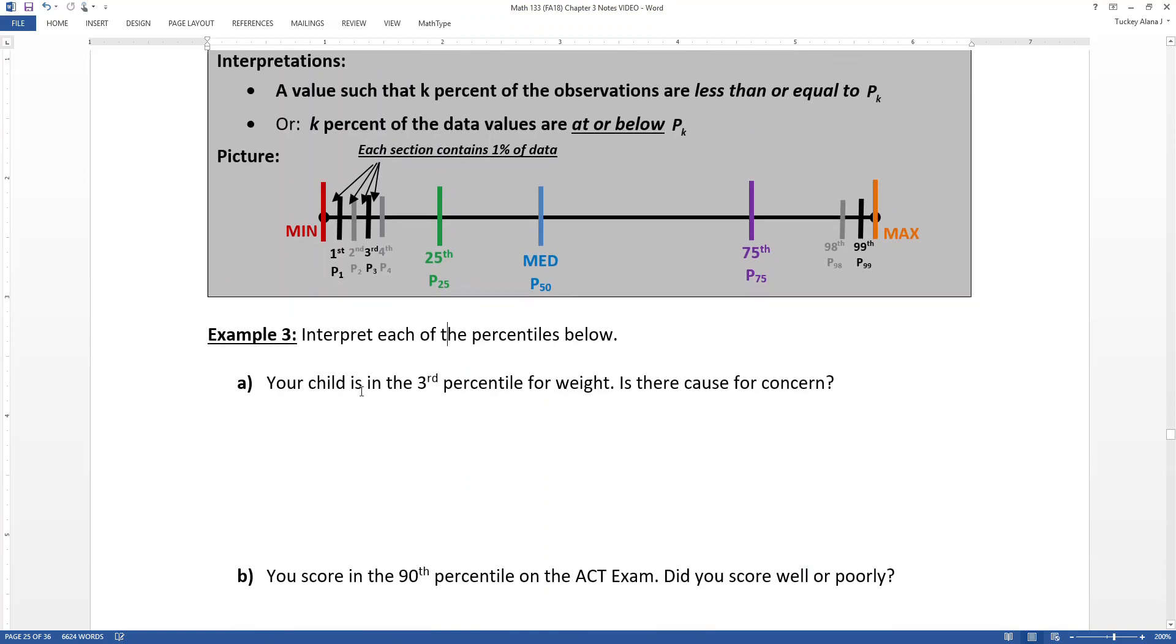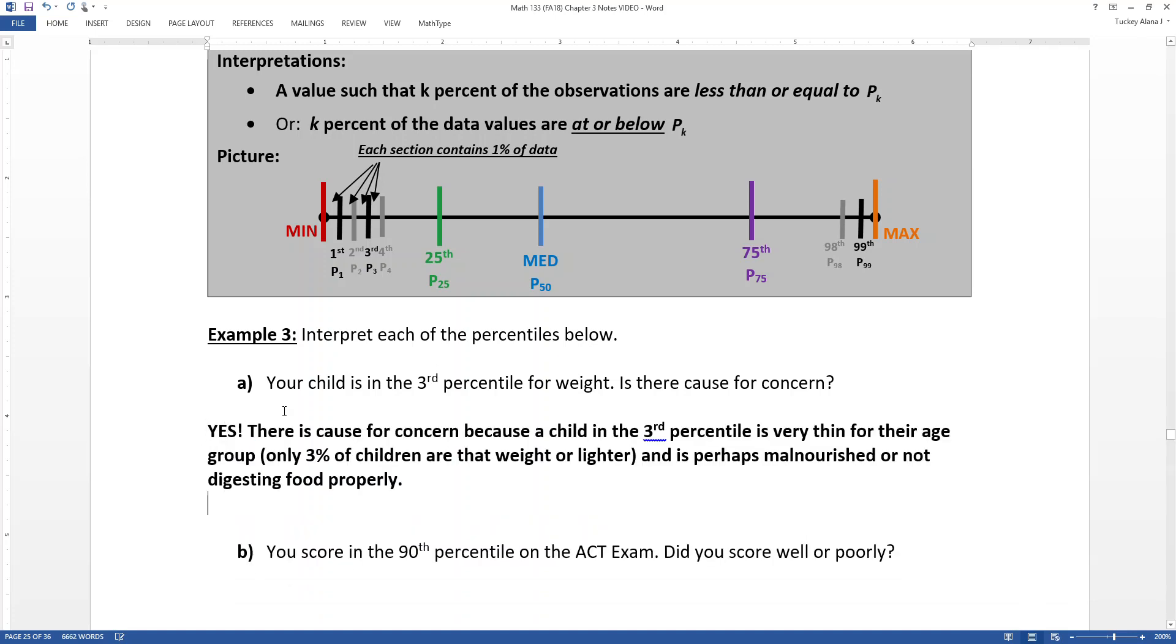Alright, so let's interpret the percentiles. Now, if you have ever seen percentiles in your life, you've seen them at the doctor's office, because they're one of the things that you look at when your child is growing. You'll take your child to the doctor's office and they'll say, hey, your child is in the third percentile for weight. Now, would that be a cause for concern? Yes, right? So if only 3% of children are less than or equal to your child in weight, that means your child is underweight.